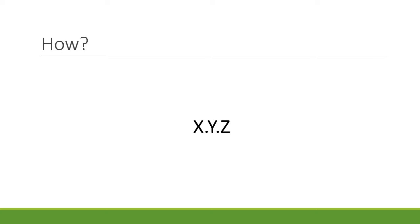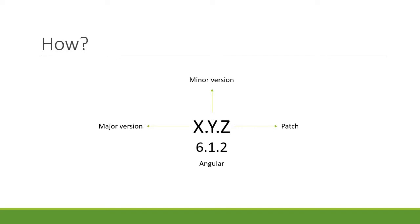So how does it work? A semantic version is of the format X.Y.Z. X stands for a major version, Y stands for a minor version, and Z stands for a patch. For example, Angular version 6.1.2 indicates a major version of 6, a minor version of 1, and a patch version of 2.